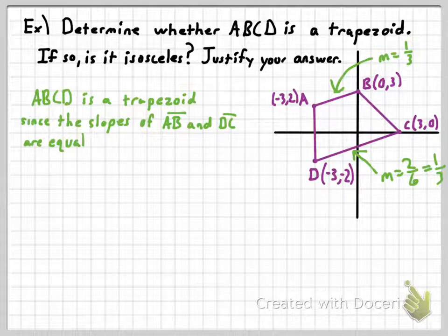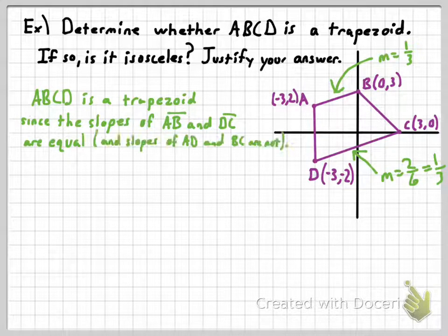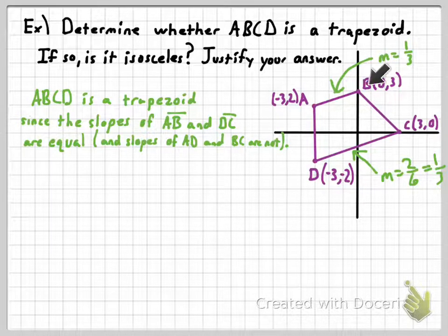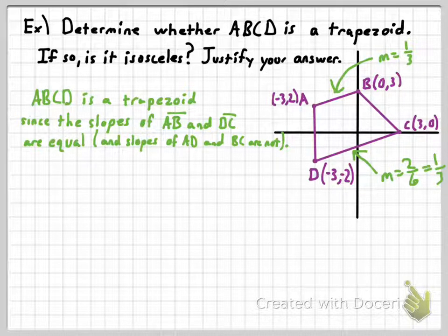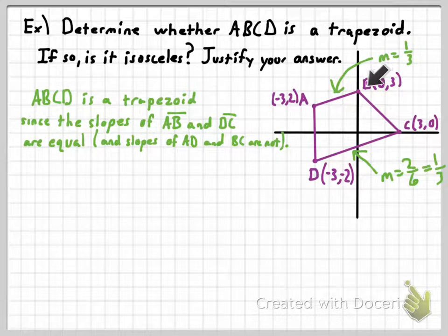I would accept that answer on a quiz or test. I'll add the detail that the slopes of AD and BC are not equal, because if both pairs of opposite sides were parallel, that would make a parallelogram, not a trapezoid. Next, is this trapezoid isosceles? We need to check if the legs are equal in length.